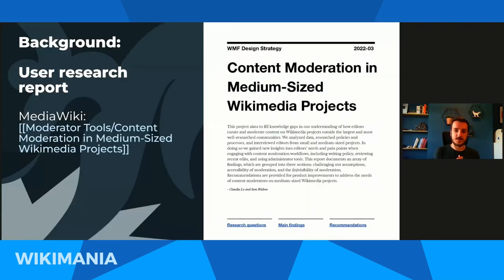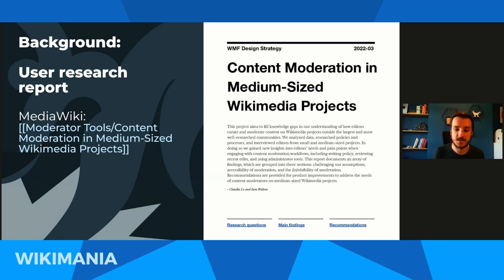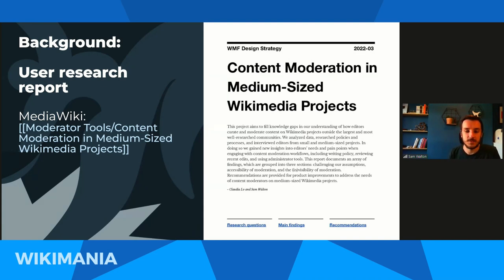Earlier in the year we published some user research. We spoke to a few dozen editors across a bunch of different Wikimedia projects and published a report called 'Content Moderation in Medium-Sized Wikimedia Projects.' We hear a lot from the biggest Wikimedia communities about their problems with content moderation, and we wanted to make sure we were also thinking about slightly smaller communities that still need to do a lot of content moderation work. We focused that research on the Tamil Wikipedia and Ukrainian Wikipedia communities, but also spoke to editors from a wide variety of places.